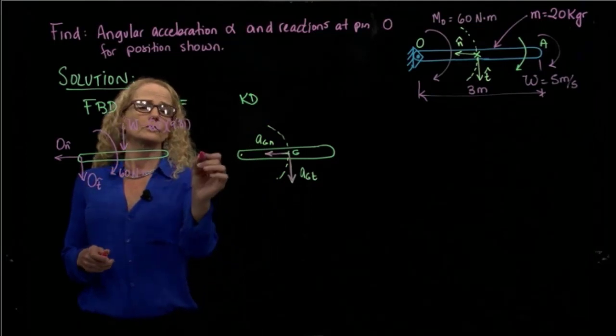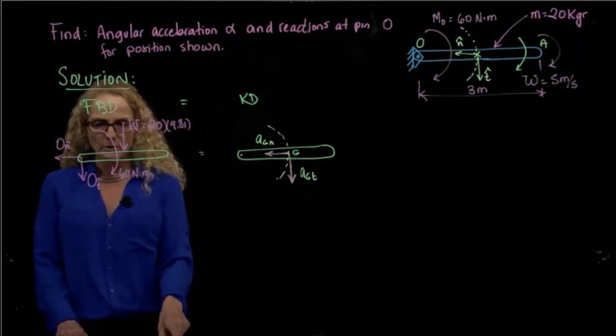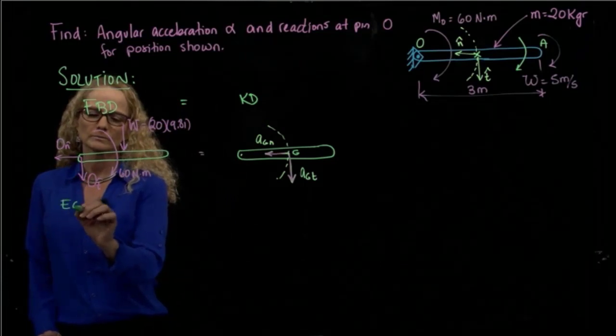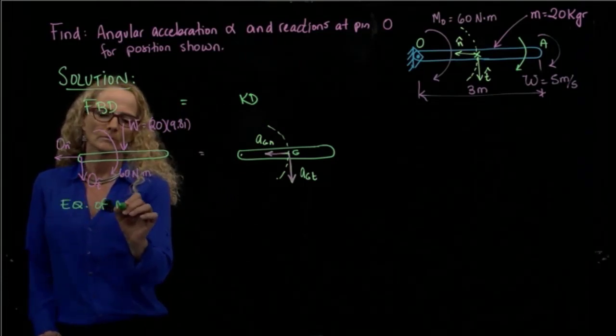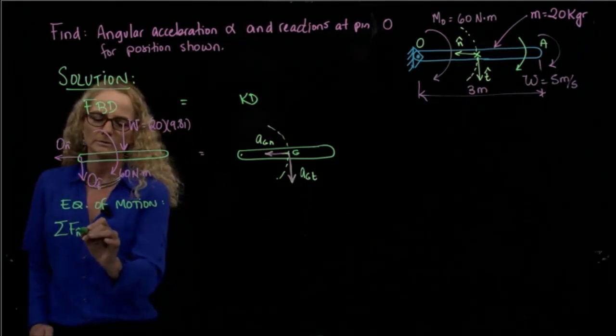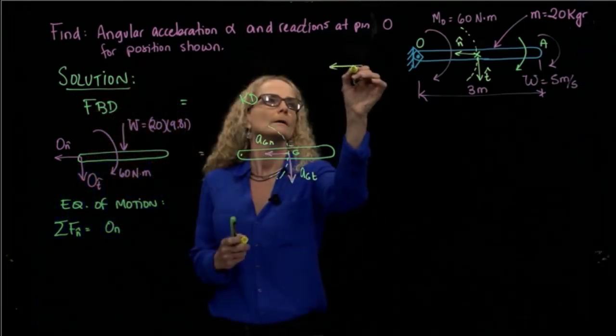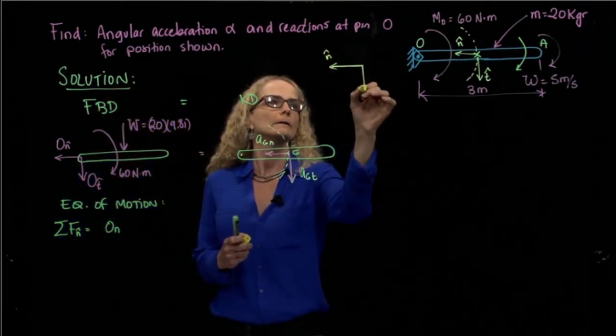Now that we have those two diagrams, we can make them equal. So the equations of motion will be, in normal direction, we will have O_N, this is the system, N and T. I can say that this direction is the positive, and this is the positive, so this will be a positive O_N.